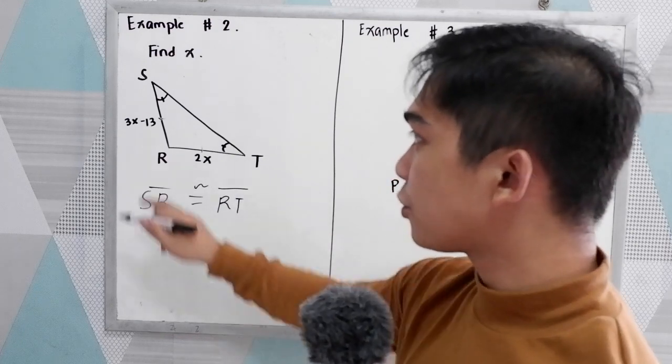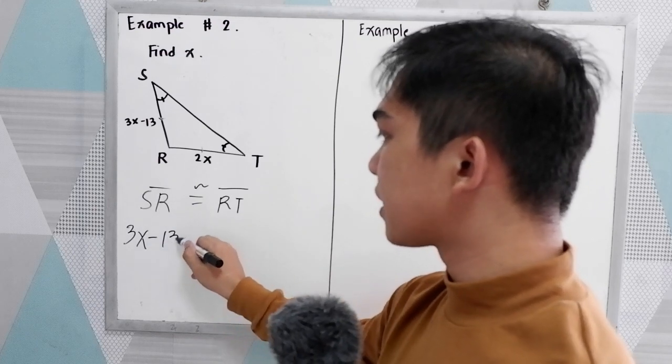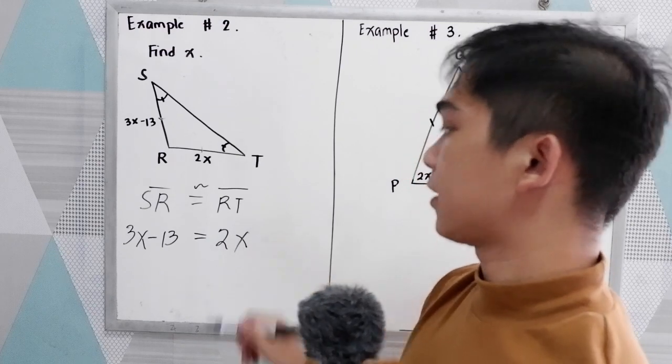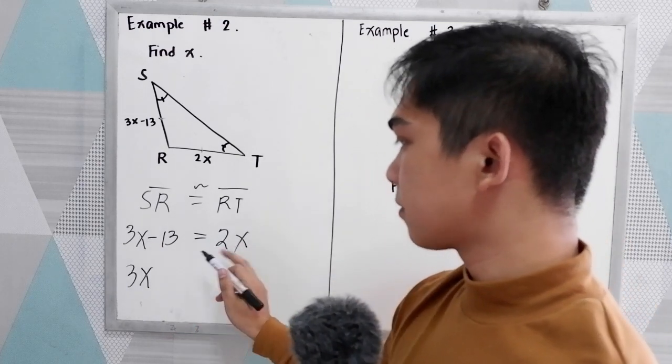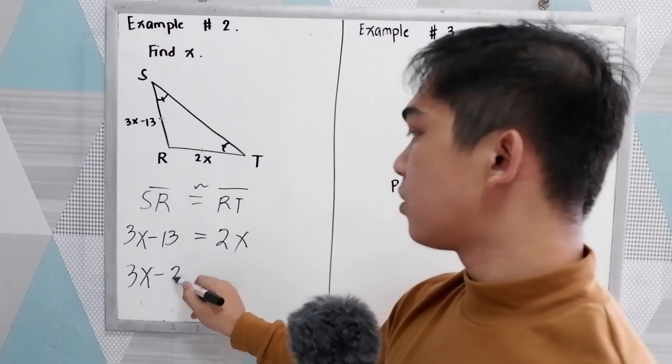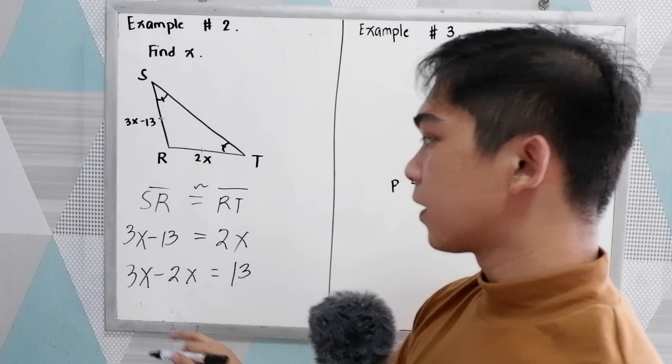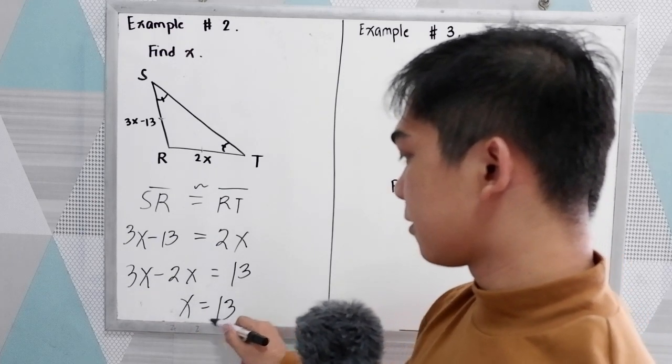Now we have the given measurement. For SR, we have 3X minus 13. That is equal to RT 2X. Solve for X. We have 3X minus 2X is equal to 13. 3X minus 2X. That is X is equal to 13.